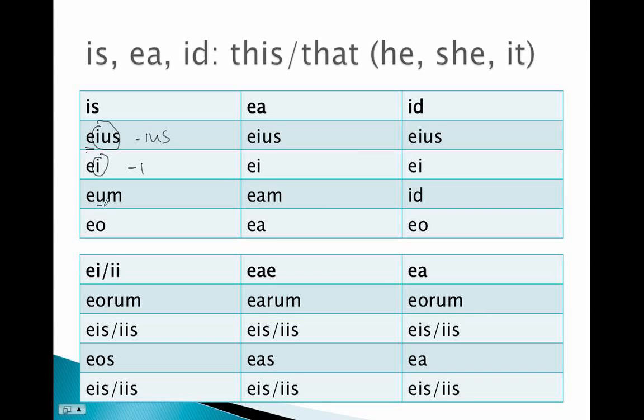And then the accusative, eum, eam, and id, the same as our nominative. But the masculine and feminine are regular first and second declension endings. And eo, ea, eo.